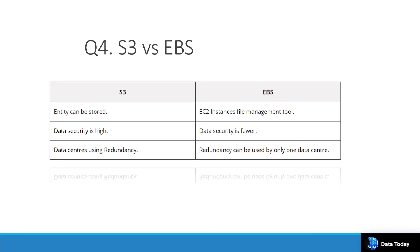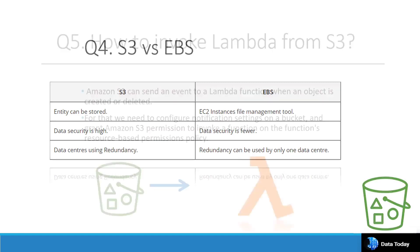S3 provides very high data security compared to EBS. However, EBS snapshots are useful — if you have data in EC2 and accidentally stop or terminate the instance, EBS snapshots can be used to recreate the EC2 instance. Also, S3 uses multi-data-center redundancy, while EBS is limited to a single data center.